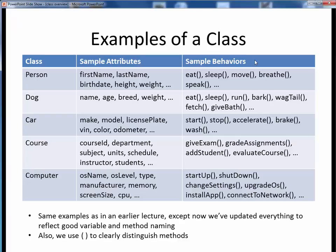They are simply chosen according to the designer's best judgment. Notice that some of these classes are very specific and concrete, while others are a bit more abstract. For example, we can easily picture the attributes for a dog and various things that a dog does. By contrast, a college course is much more abstract, yet it can still be described as a software thing with attributes and actions. It's also worth mentioning that these are the same examples we saw in an earlier video lecture, except now we are using good camel case naming for all variables and methods. Also notice that we are using parentheses to clearly designate all these on the right as methods.